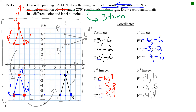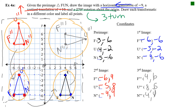We started with the pre-image in quadrant 4. The horizontal translation of −9 took us to the first image. The vertical translation of +10 took us to the second image in quadrant 2. Finally, the rotation brought us to quadrant 1 for the third image and final answer.